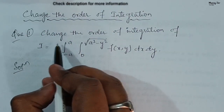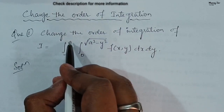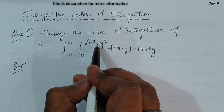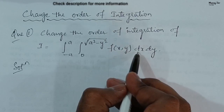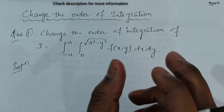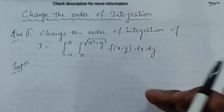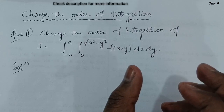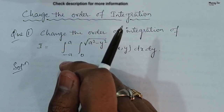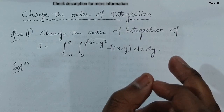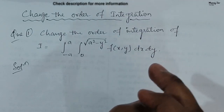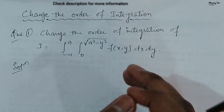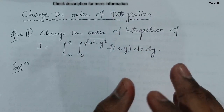The question says: change the order of integration of i equals the integral from minus a to a, integral from 0 to root of (a squared minus y squared), of f(x, y) dx dy. There is one important thing — sometimes the order of integration given in the problem is incorrect as per the given set of limits, so we must check that first.